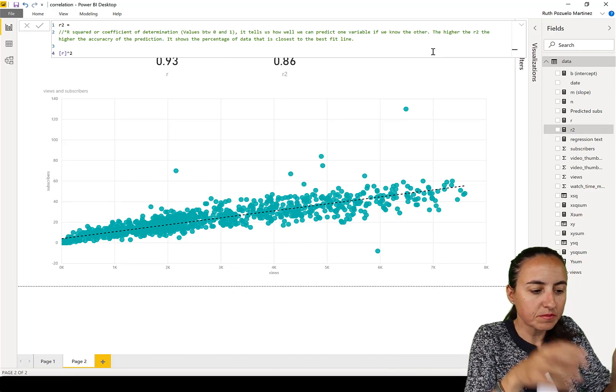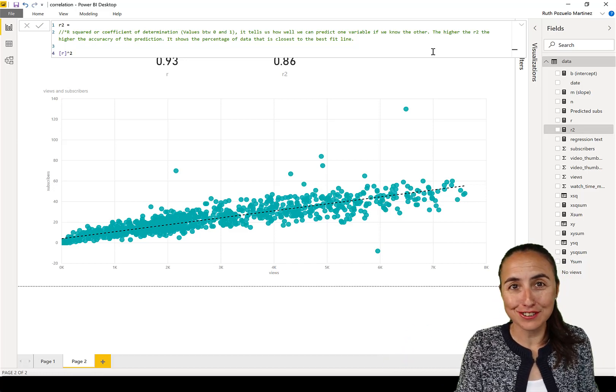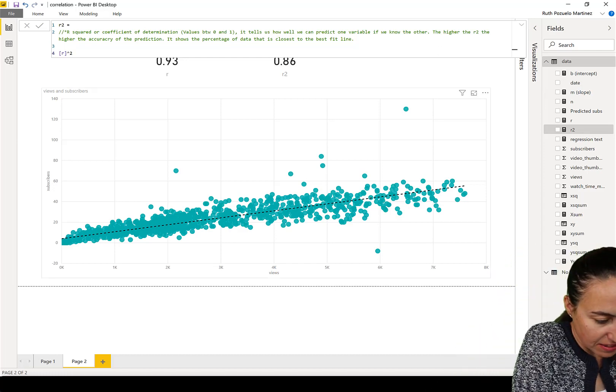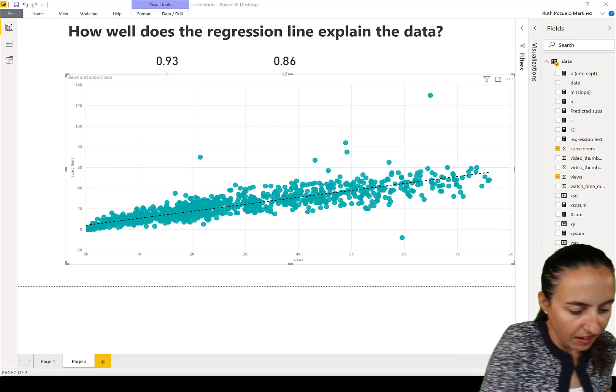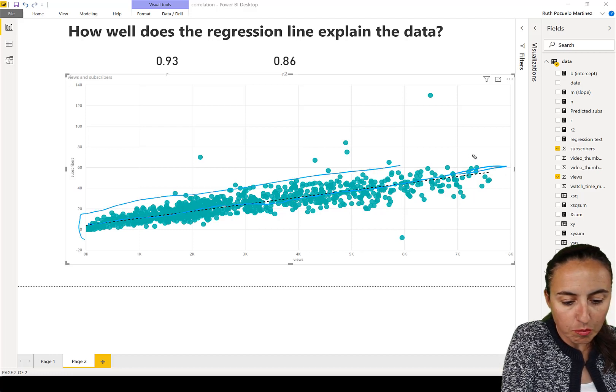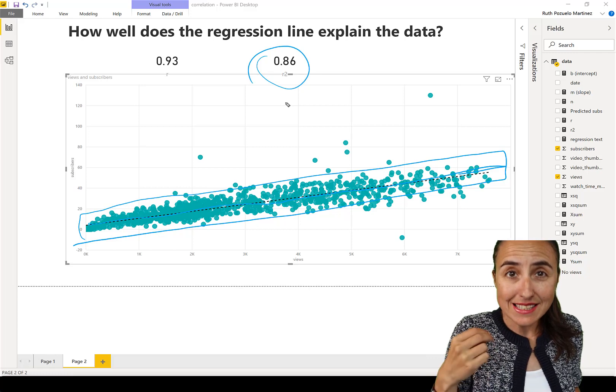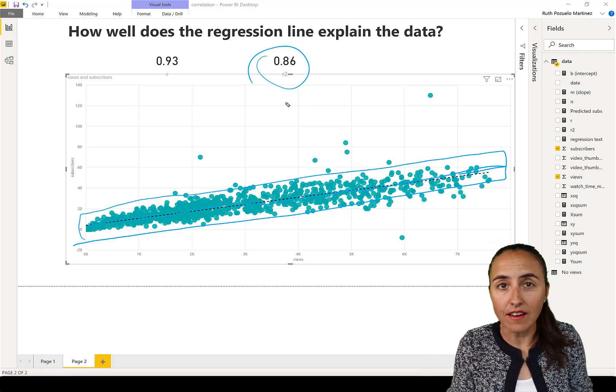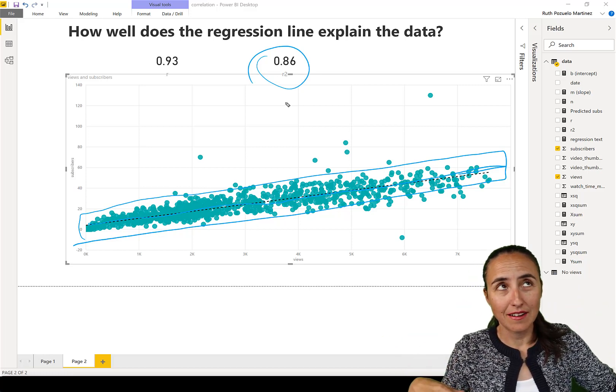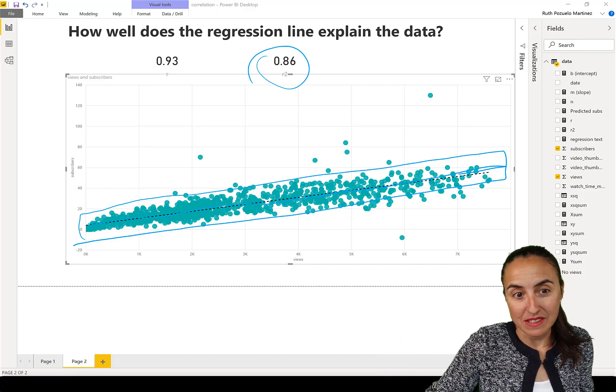And then we have r squared in there. So r squared goes from zero to one. And it tells us the percentage of the data that is closest to our fitted line. So this is our fitted line. So the percentage of the points that are close to the fitted line is what this number is telling us. So it's telling us that 86% of the points are very, very close to our fitted line, which means that the relationship is very strong and one variable predicts the other with significance. So that's basically what they mean.